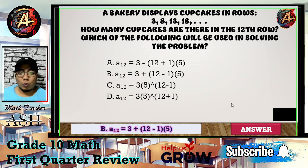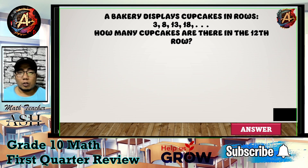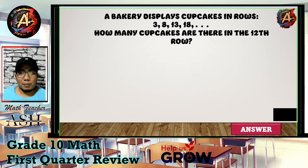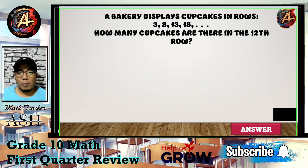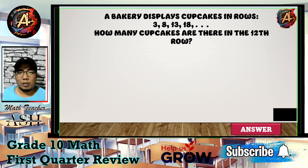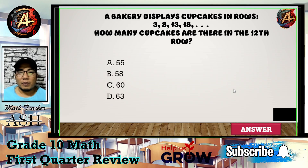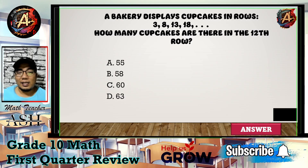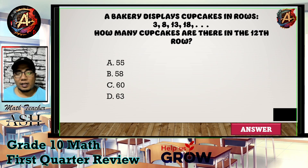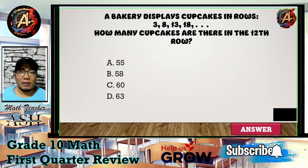Question number eight uses the same sequence as the previous question but now asks for the actual value of the 12th term. How many cupcakes are there in the 12th row? Is it A) 55, B) 58, C) 60, or D) 63? I'll give you five seconds to think about your answer.